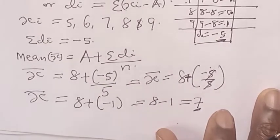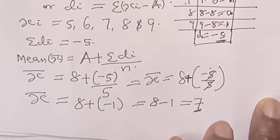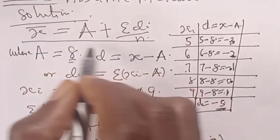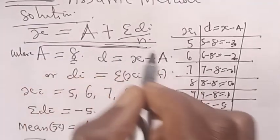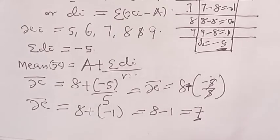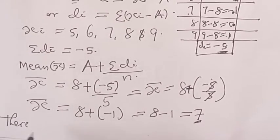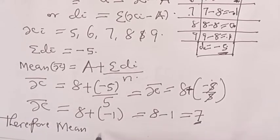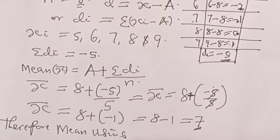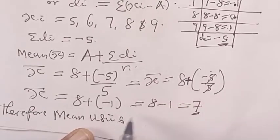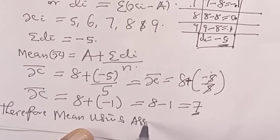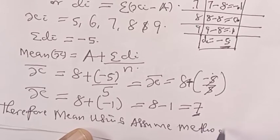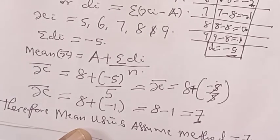You can see now that when we use assumed mean method, we also get 7. You see that formula. We got our answer to be 7. Therefore, mean using assumed mean method is equal to 7. Thank you.